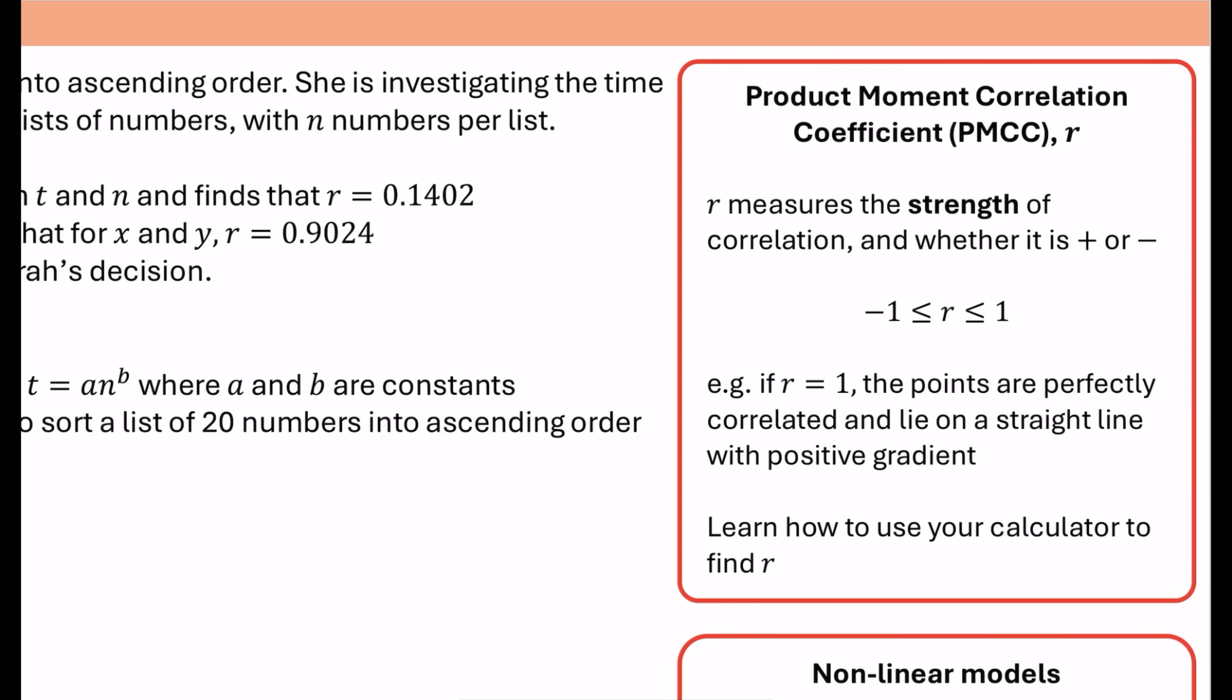The value of R will always vary between minus one and one. It can be equal to those ones. If it's zero in the middle, that means that there is no correlation at all. If R is equal to one, for example, exactly equal to one, this means that the points are perfectly correlated and they lie exactly on a straight line with a positive gradient.